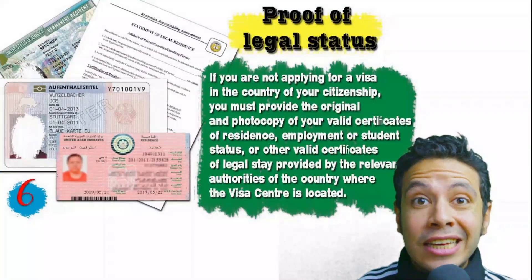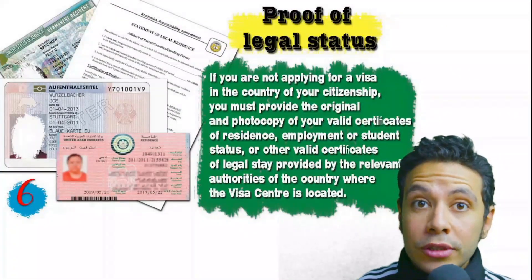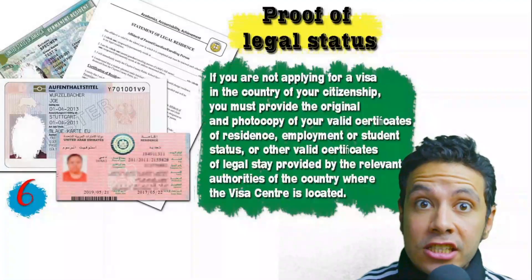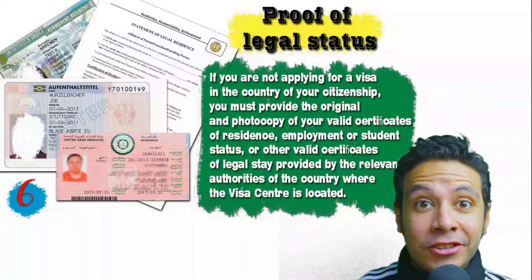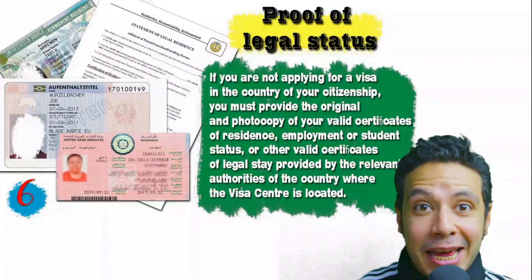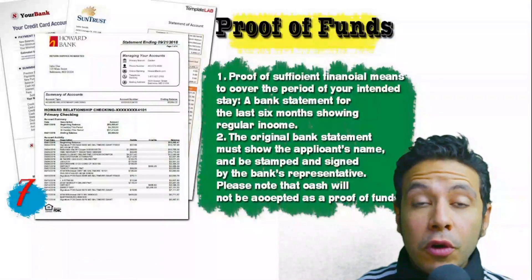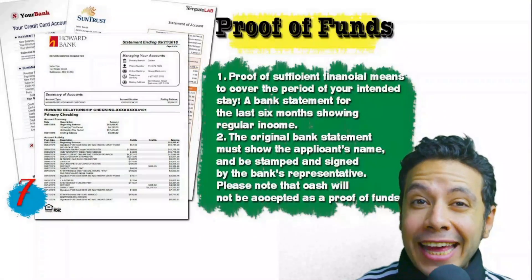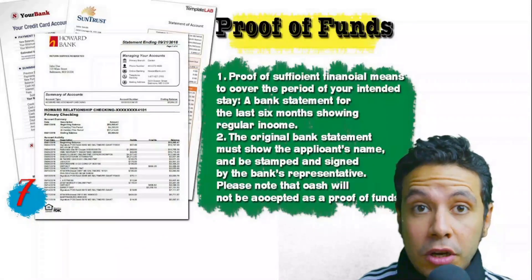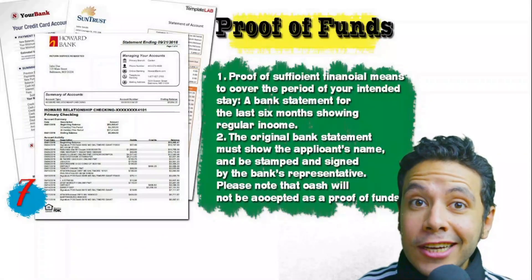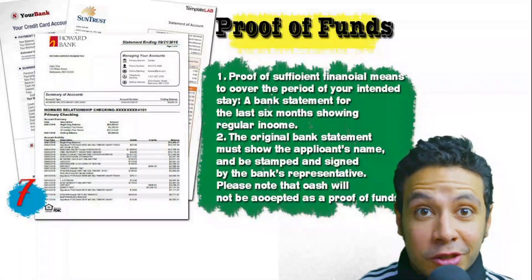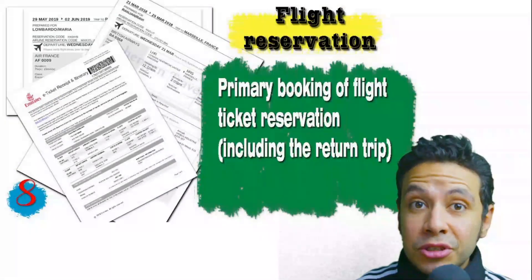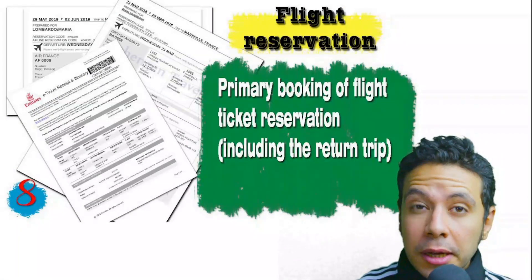If you are applying from a country different from your own, you need proof of legal status — a certificate of legal residence, and in some cases a valid residence visa is also accepted. You will also need to provide proof of sufficient funds: a bank statement showing your balance for at least six months, original, signed and stamped by the bank. Remember that cash is not accepted as proof of funds.